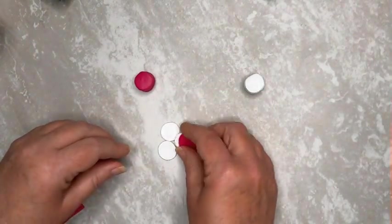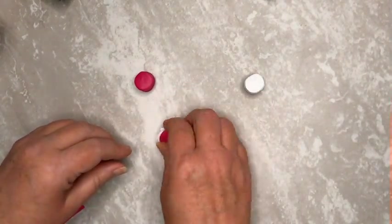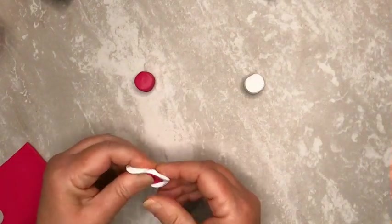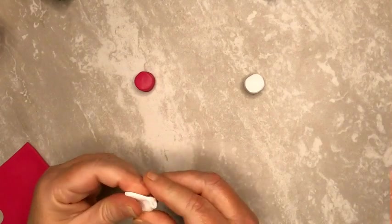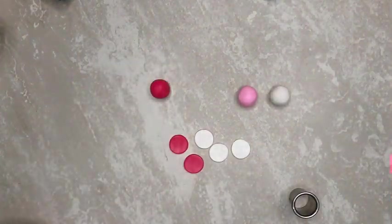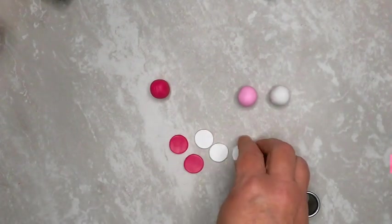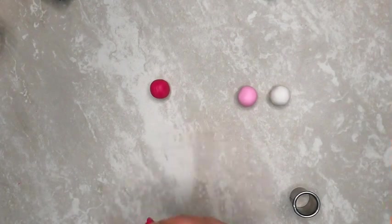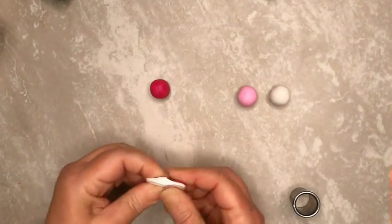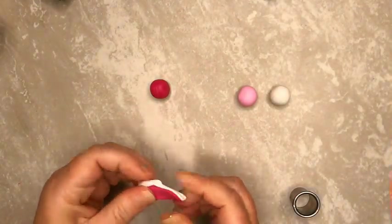Cut four circles of white clay and one circle of fuchsia clay. Mix them together to create the second lightest shade of fuchsia. Next, cut three circles of white clay and two circles of fuchsia clay. Mix them together to create a slightly darker version of fuchsia.